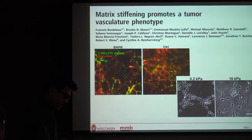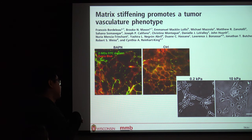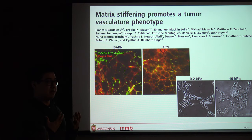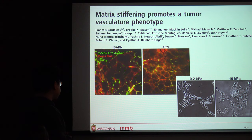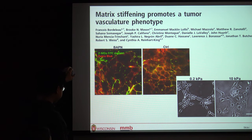A lot of work has looked at how collagen density affects the primary tumor and cancer cell migration or invasion, but not much work has examined tumor microenvironmental components like vasculature. A very recent 2017 paper from Cynthia Reinhart-King's lab looks at how matrix stiffening and density can promote a tumor vascular phenotype. Some hallmarks of tumor vasculature are that they're malformed, don't form nice junctions, are hyperpermeable, and form very poor networks.